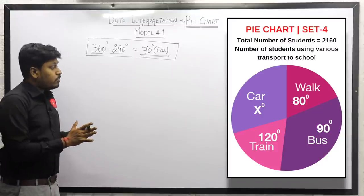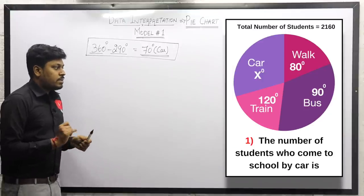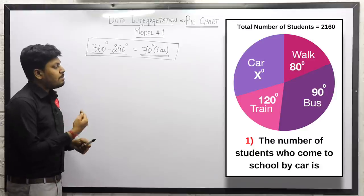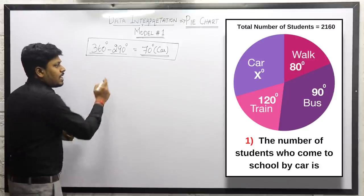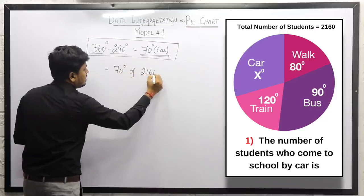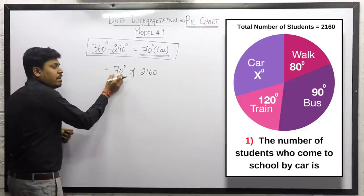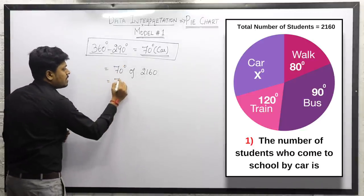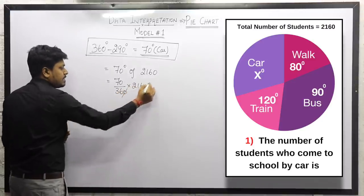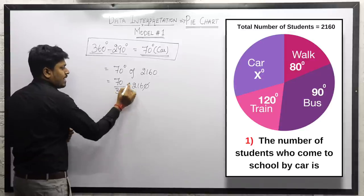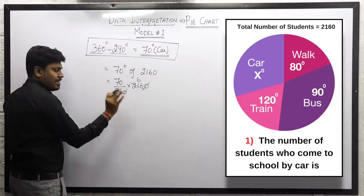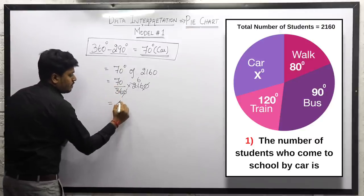Question 1: Find the number of students who come to school by car. Car is 70 degrees out of 2160 students, so we calculate 70 divided by 360, multiplied by 2160. Cancel the zeros, then divide by 6 — 6 times 6 is 36 — giving us 70 multiplied by 6, which equals 420.